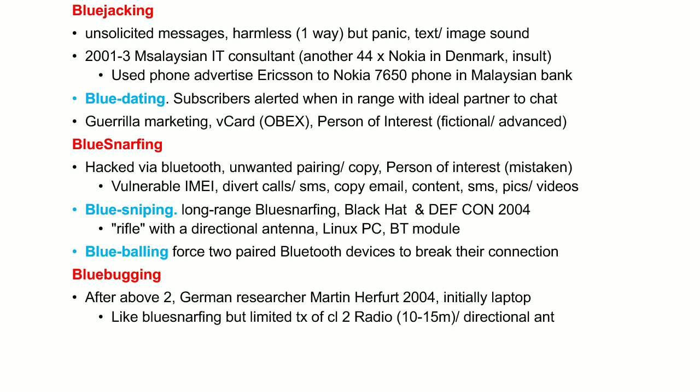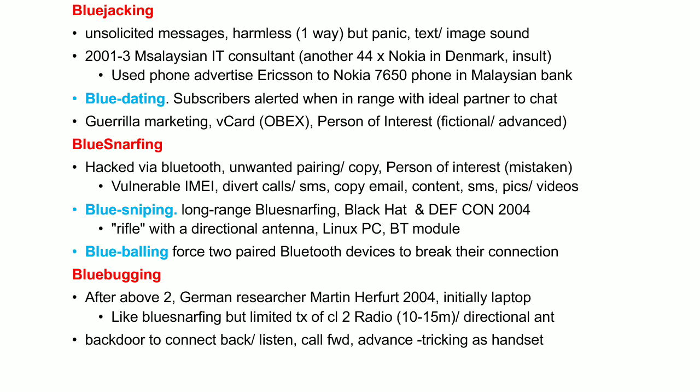The range of Blue Bugging can be extended using a directional antenna. The word 'bugging' means you convert the target device — using its vulnerable Bluetooth software — into a bug for its environment. For example, opening its microphone to record environmental sounds or listen to calls. After connecting, the hacker creates a backdoor that connects back to the hacker's device. Call forwarding can also be enabled on the target device so that any incoming calls are forwarded to the hacker's device instead.